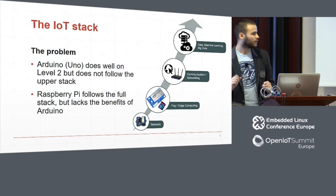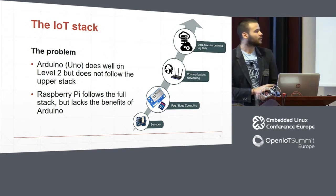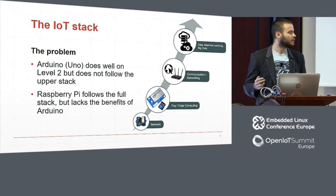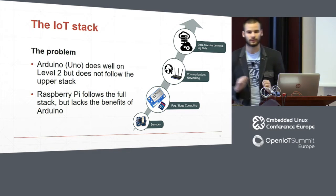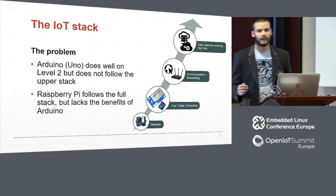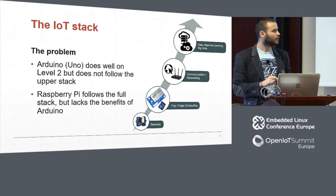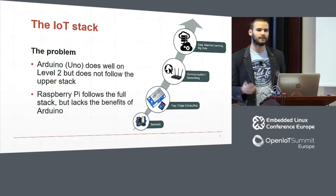The Arduino Uno works very well on the first two levels. It has a part on which we can process and store some data, and you can connect sensors very easily on it. However, for layers two and three, it doesn't have connectivity to the internet through an Ethernet port — there are shields you can connect, but it doesn't work out of the box. Raspberry Pi, on the other hand, follows the full stack — layers two, three, and four. It has processing power, handles all inputs, and on the networking part, Raspberry Pi 3 has wireless so you can send data to a big server for analytics.